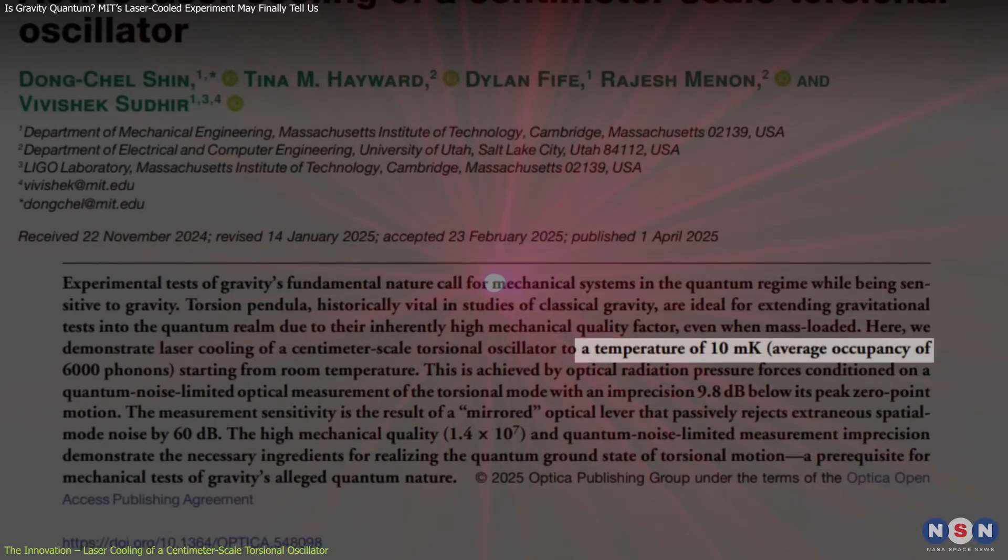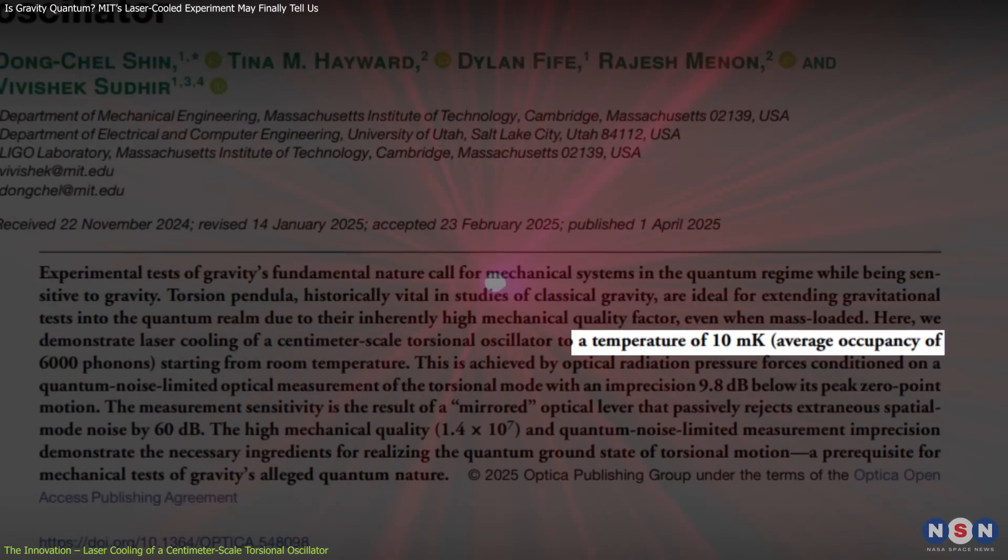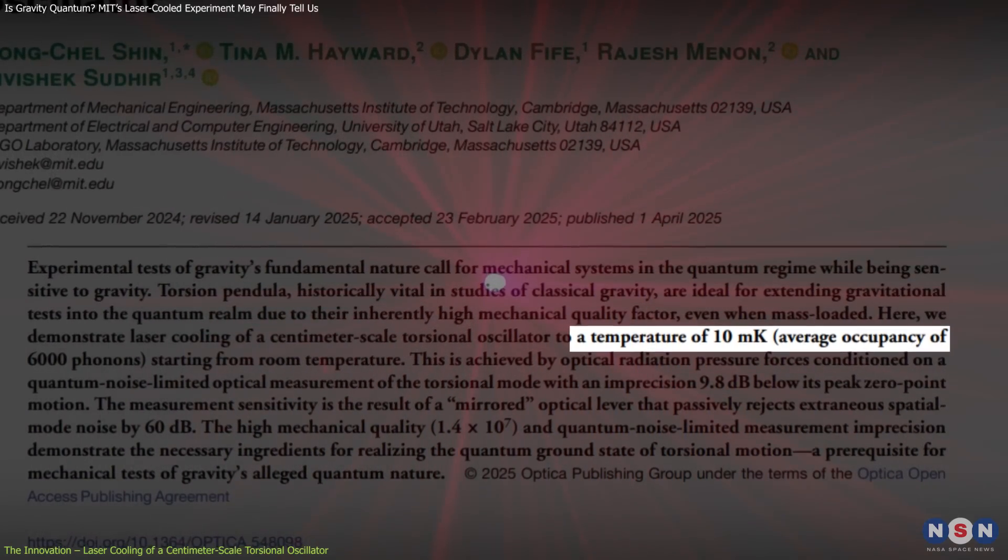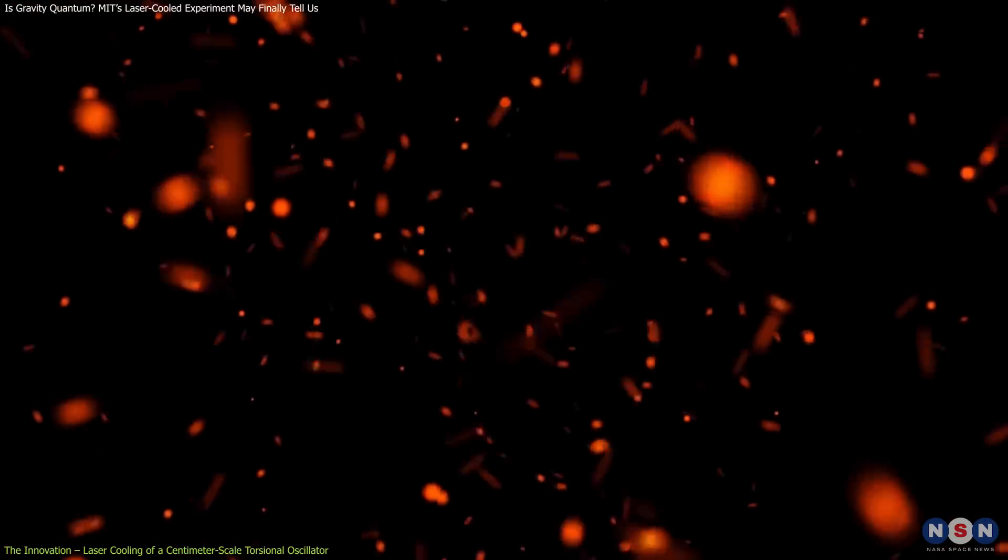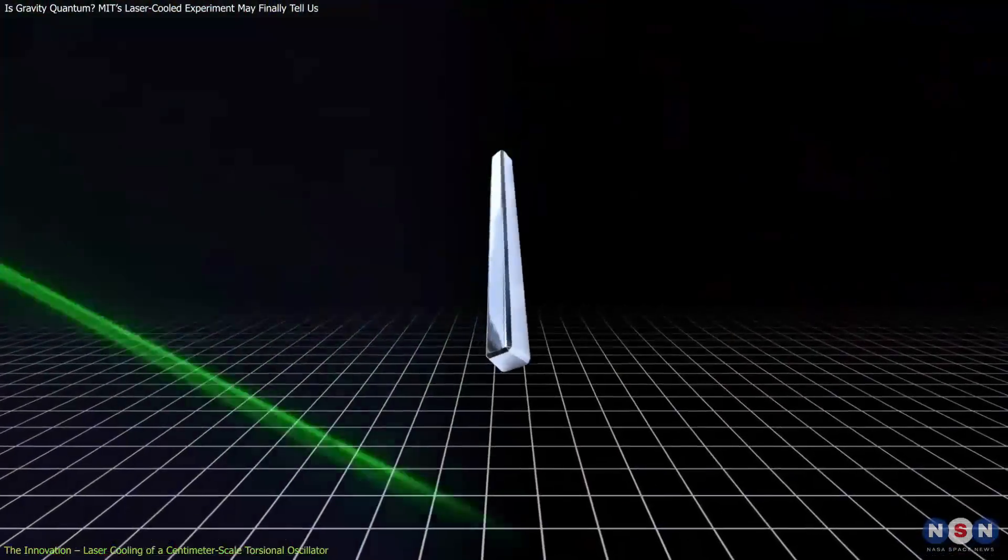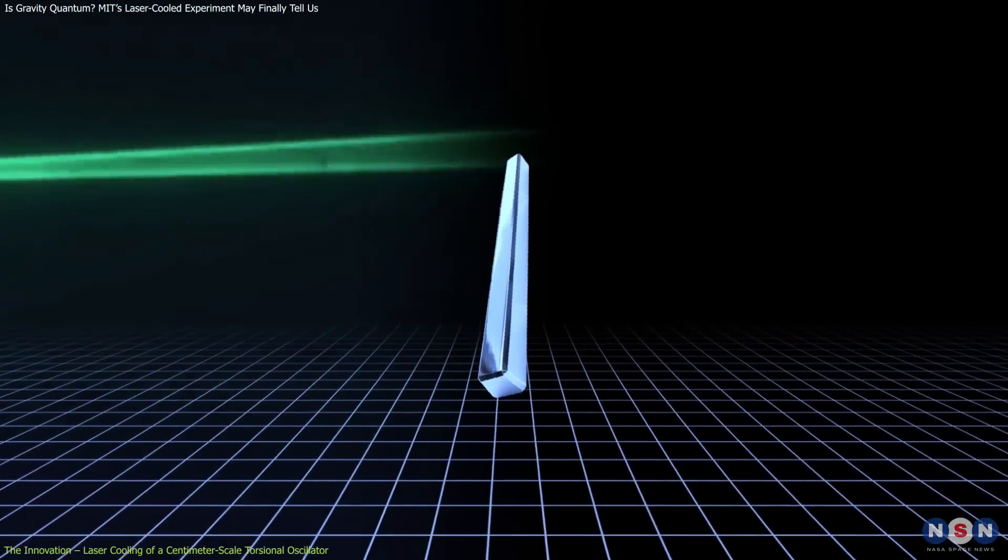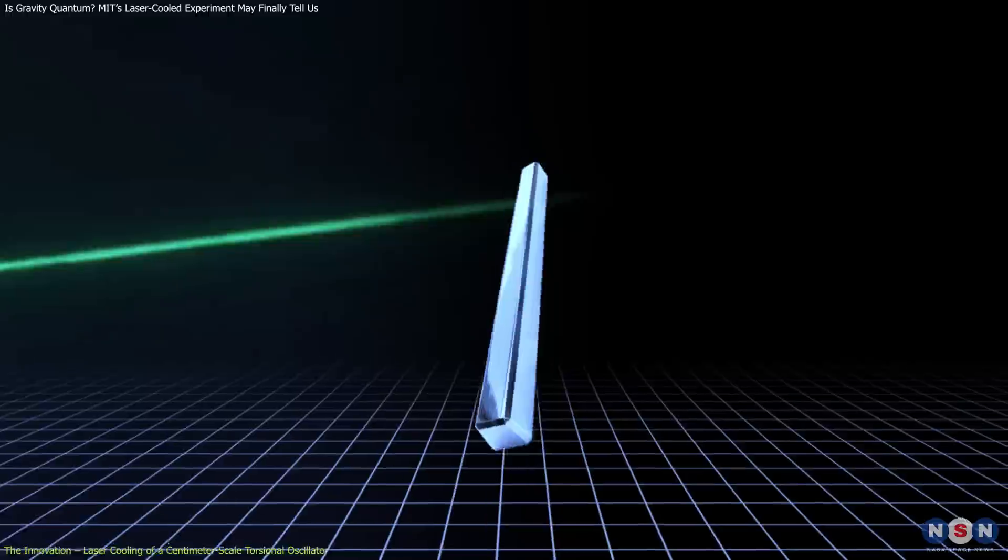Reaching levels sensitive enough to detect motion ten times smaller than the oscillator's quantum zero point fluctuations. Using this setup, the team cooled the torsional oscillator down to 10 millikelvins, just one one-hundredth of a degree above absolute zero. This is a region where thermal vibrations are virtually eliminated, and quantum mechanical effects begin to dominate. Getting a macroscopic object this cold, and this isolated, is a huge technical and conceptual achievement.